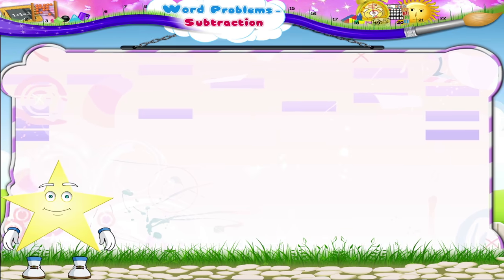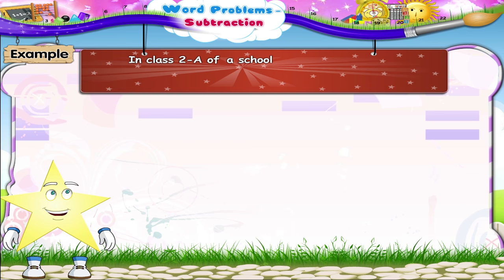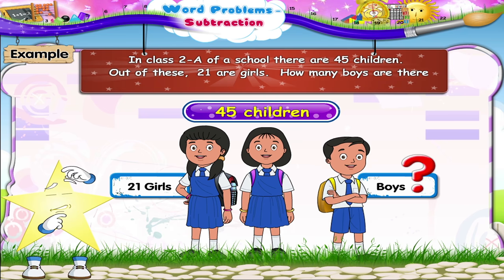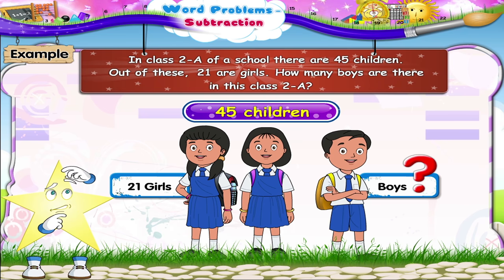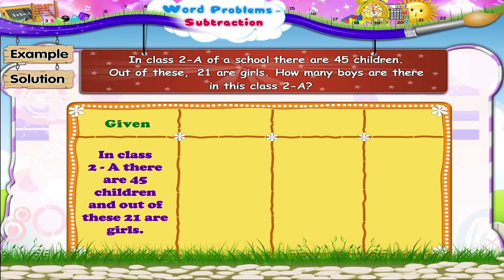Come on, Stari, let us solve the next example. In class 2A of a school, there are 45 children. Out of these, 21 are girls. How many boys are there in class 2A? It is given that in class 2A there are 45 children, and out of these 21 are girls. We have to find the number of boys in class 2A.